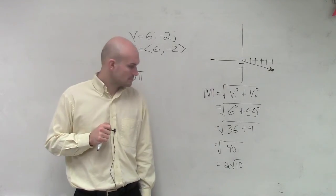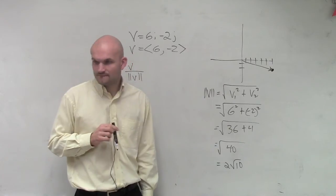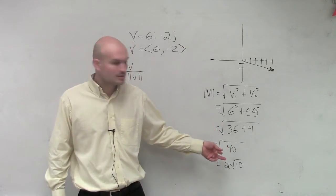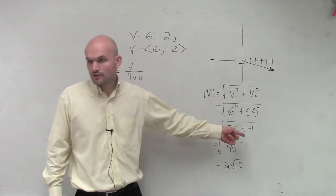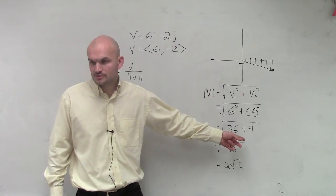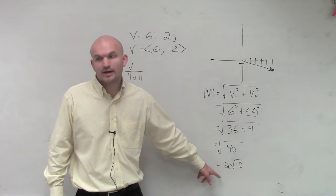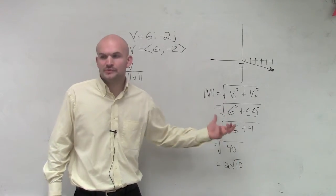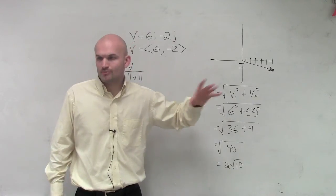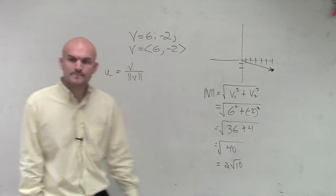Student: Can you do the square root of 36 and the square root of 4 separately and add them? Teacher: What's the square root of 36? It's 6. What's the square root of 4? It's 2. Six plus 2 is 8 — but that's not the right answer. You've got to make sure you can't distribute the square root among addition or subtraction. You have to add them up first.